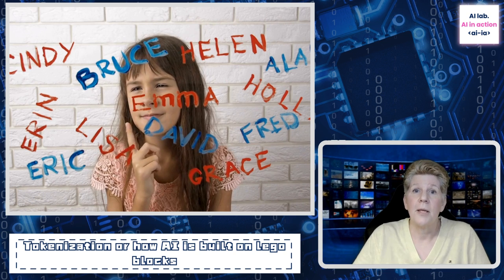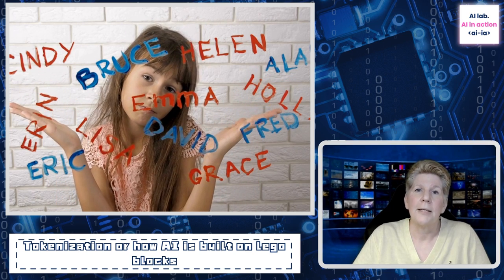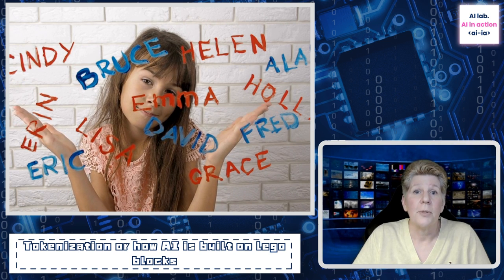But how does the model decide which token to choose next? Well, that's where things get a little bit complicated. It's a balancing act between randomness and determinism. Sometimes the model takes a wild guess, just to see where it leads.